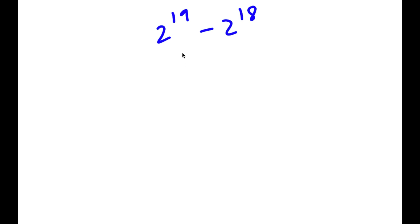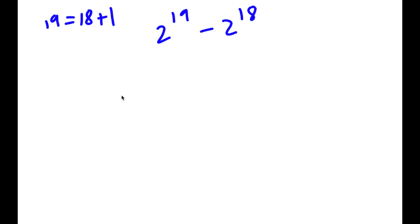Alright, so I have 2 to the power of 19 minus 2 to the power of 18. Now to start, 19 is equal to 18 plus 1. So if I replace 19 with 18 plus 1, I get 2 to the power of 18 plus 1, minus 2 to the power of 18.